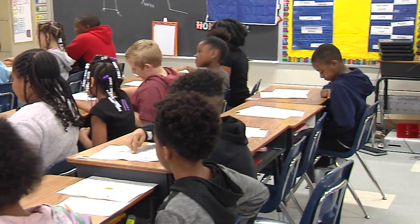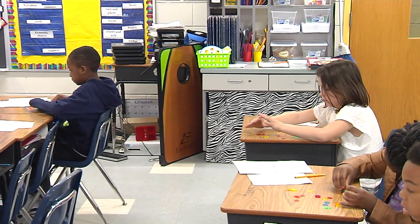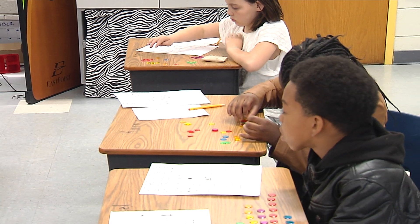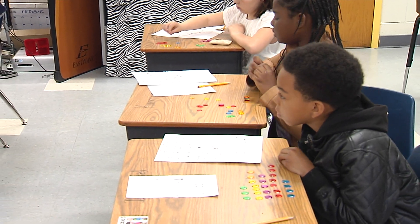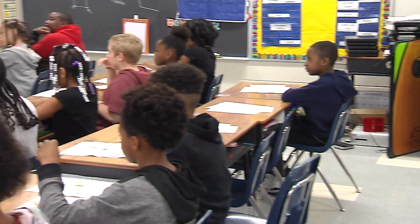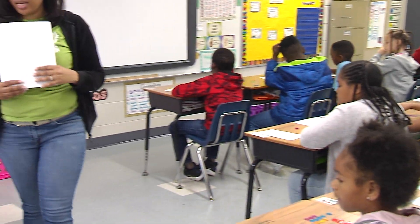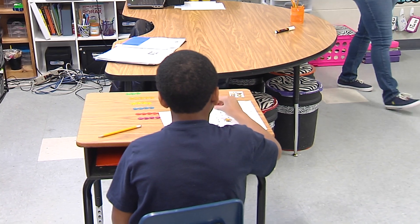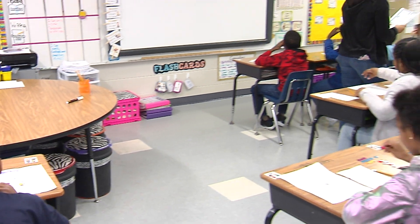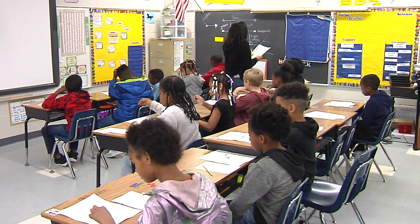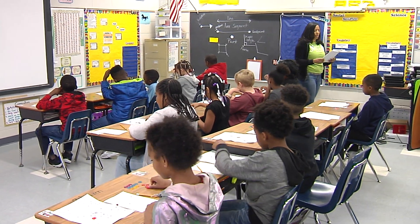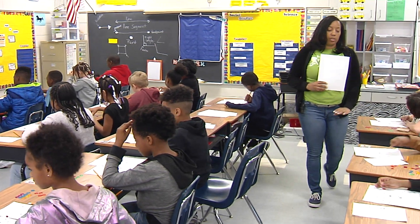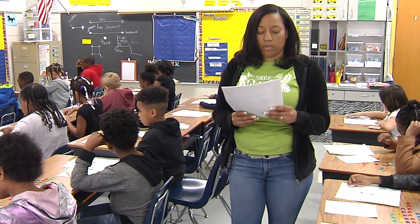A line with a start point but no end point — a start point and then an arrow going on. Another way of saying that is a part of a line that has one endpoint and continues on and on in one direction. If you need your vocabulary sheet, because we just introduced this, you can always refer back to your sheet to help you out.